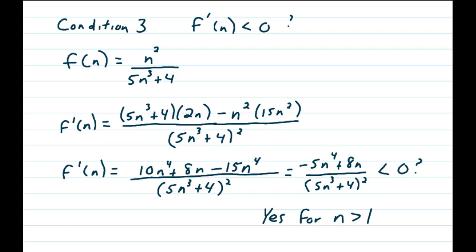On the bottom, I have the 5n cubed plus 4 quantity squared. On the top, you have the 5n cubed plus 4 times the derivative of the top, which is 2n, minus n squared, which is the top, times the derivative of the bottom, which is 15n squared.